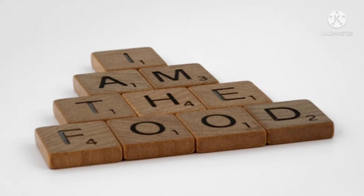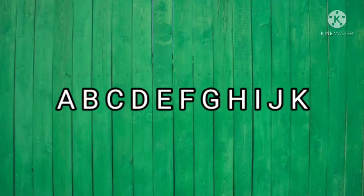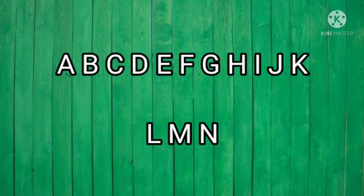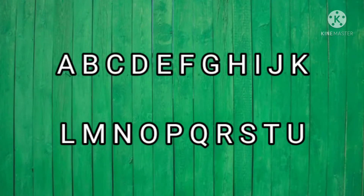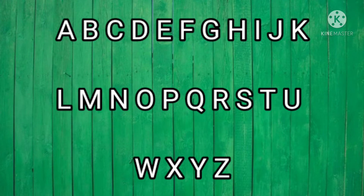In the English alphabet there are a total of 26 letters. They are: A, B, C, D, E, F, G, H, I, J, K, L, M, N, O, P, Q, R, S, T, U, W, X, Y, Z. These are the capital letters, as you can see here.